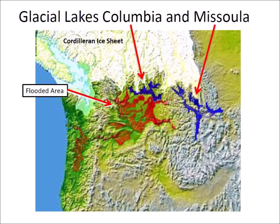The Missoula floods were cataclysmic floods that swept across eastern Washington and down the Columbia River Gorge at the end of the last Ice Age. The floods occurred between 15,000 and 13,000 years ago. Lake Missoula measured 7,770 square kilometers and contained about 2,100 cubic kilometers of water, which was about half the volume of Lake Michigan. The floodwaters carried large icebergs that scoured the land, creating scablands with giant ripples. The melting icebergs left the landscape covered with erratic boulders carried within the glacier ice.